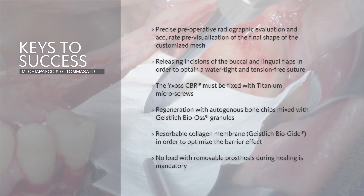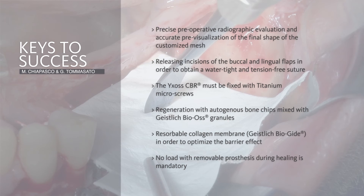The sixth point is to cover the titanium mesh with a resorbable collagen membrane in order to optimize the barrier effect. And of course, last but not least, no loading with removable prosthesis during healing is absolutely mandatory. In the case of partial edentulism with distal or mesial teeth in between, it is possible to use vacuum-formed retainers or something like Maryland bridges. In case of total edentulism of lateral saddles with no teeth and no distal support, the best thing to do is not to use any type of prosthesis until healing has occurred.